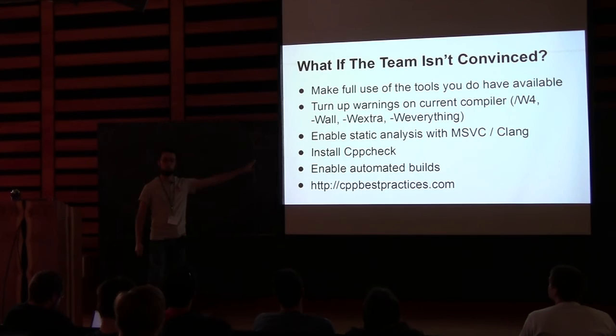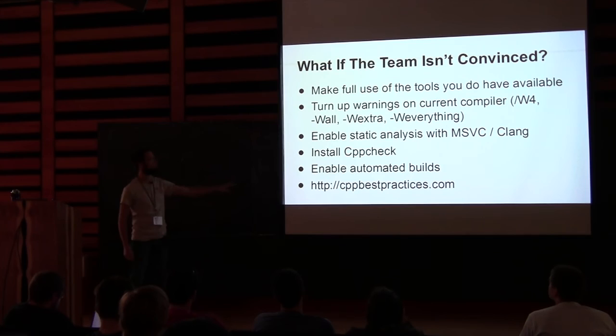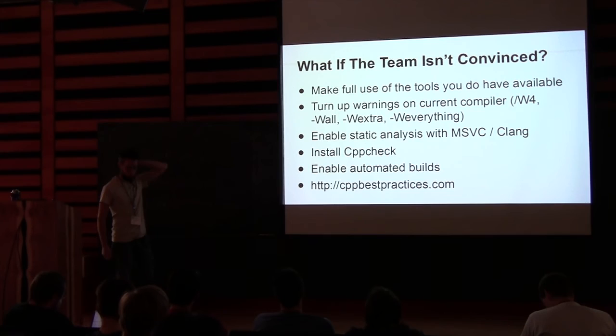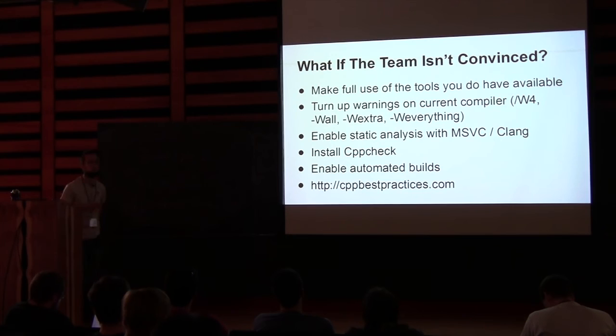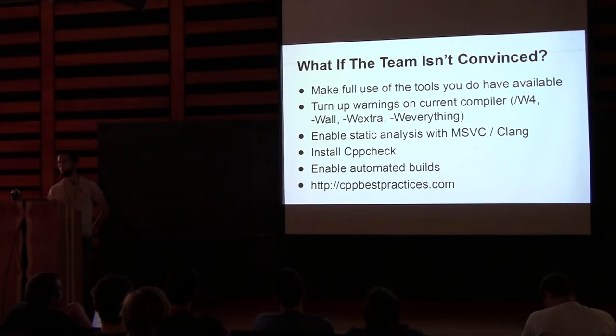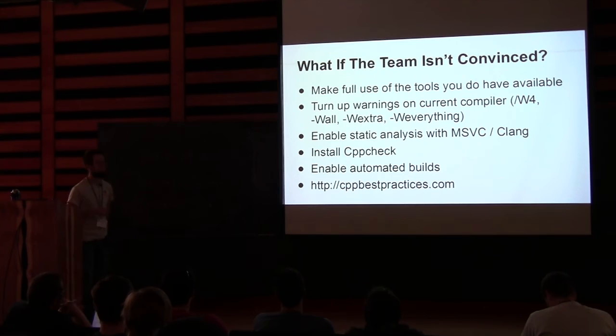Make sure you're using the static analysis available to you. GCC doesn't have it built-in, but CppCheck is free, works on all three platforms, and has a Visual Studio plugin — I've had like one false positive from CppCheck. Make sure you're using the static analyzer on MSVC and Clang, and preferably roll this into your automated build process. Add /analyze to your command line parameters in your automated build. Visual Studio 2013 with /analyze is really slow, but 2015 seems much faster with analyze mode. I have some of these things in the CPP Best Practices coding standards document.